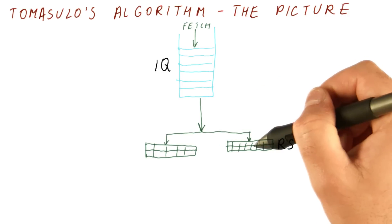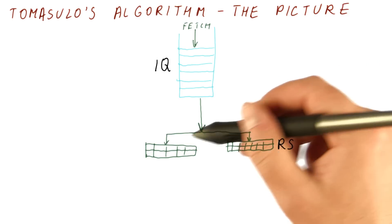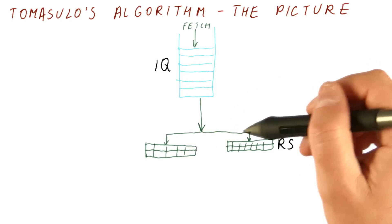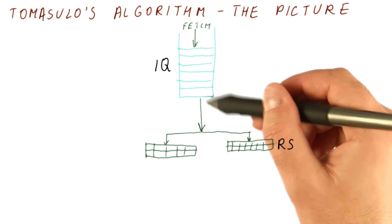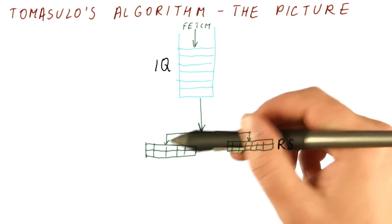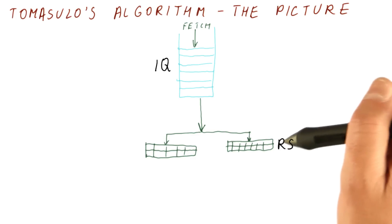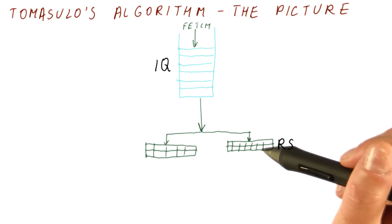We want to put it into a reservation station. There are a number of reservation stations, and when one becomes available, we will put an instruction into one of those. Reservation stations are where instructions sit for their parameters to become ready.